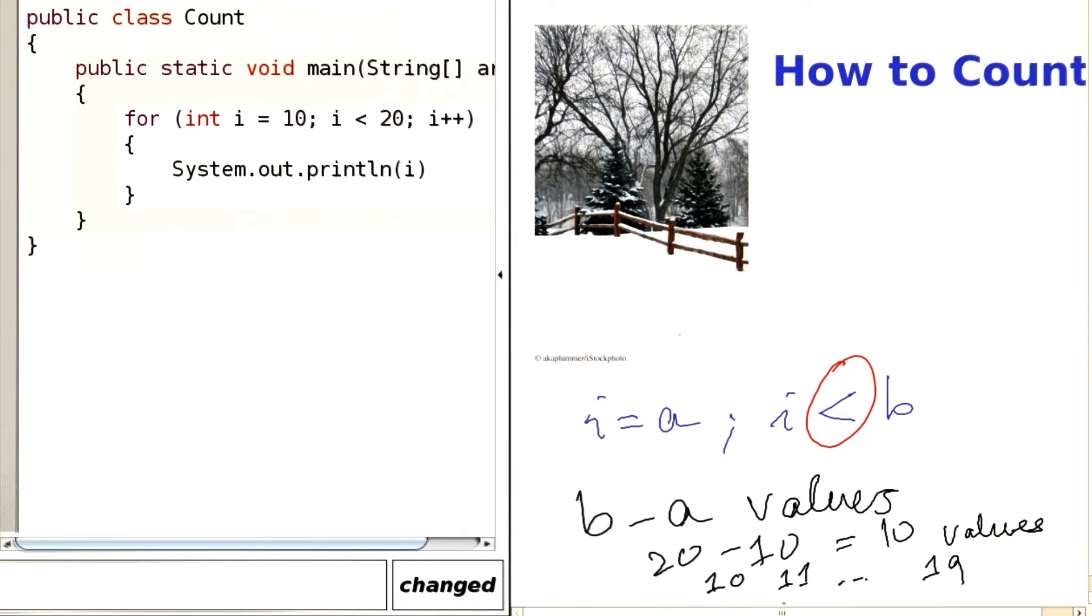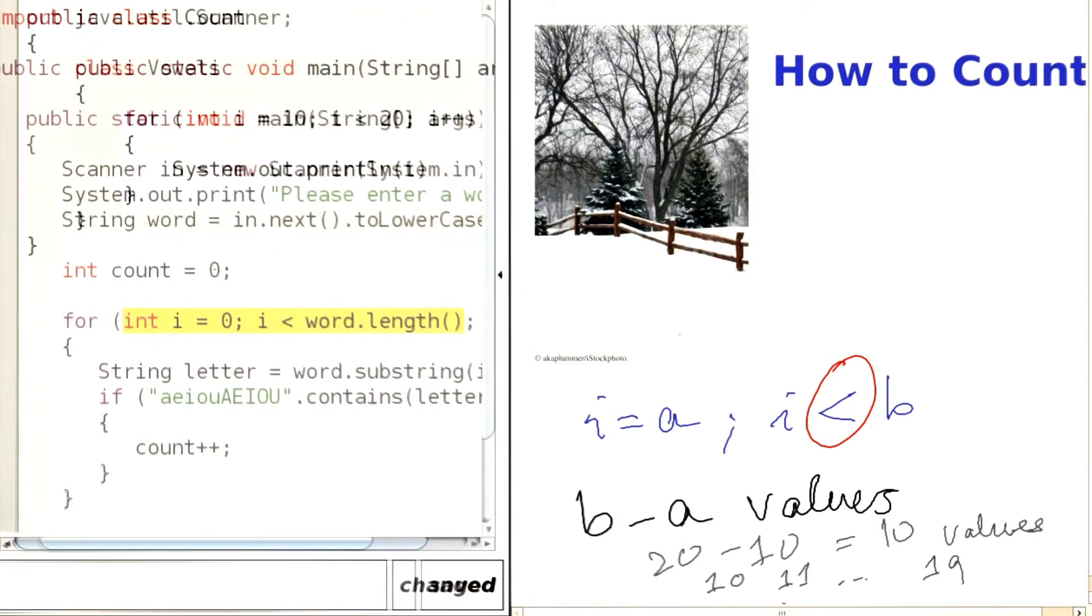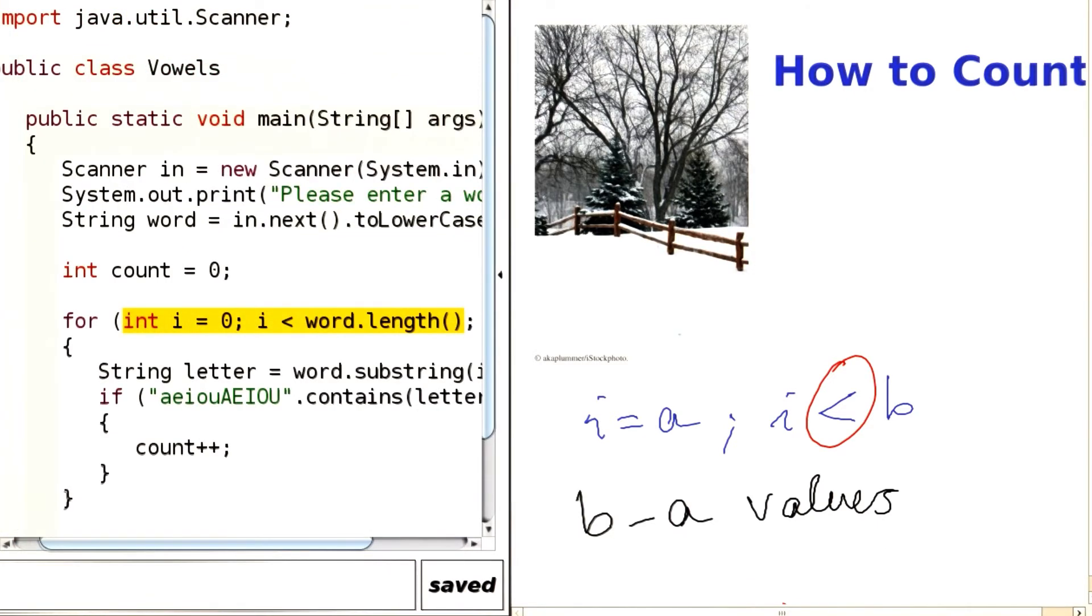That's a very common situation that you've seen before. The situation where you have a less than for the upper bound is actually very common, and you've seen it several times before.